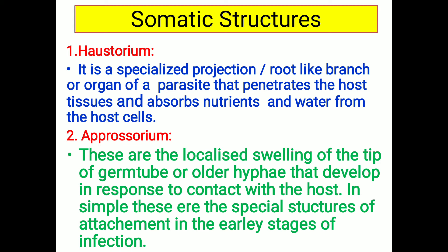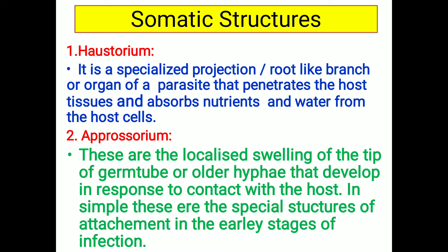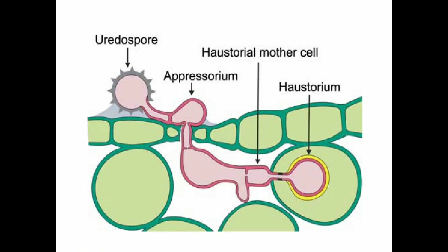Next we discuss the somatic structures, or modifications of the fungus. First one is haustorium. In flowering plant parasites or phanerogamic plant parasites we already discussed the meaning of haustorium. The haustorium is a specialized projection or root-like branch or organ of the parasite that penetrates the host tissue and absorbs nutrients and water from the host cell. It is the outgrowth of the fungus that penetrates inside the host cell. Haustorium is called the absorbing organ.